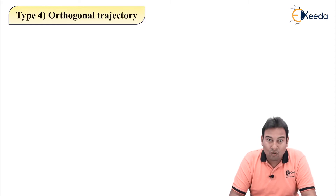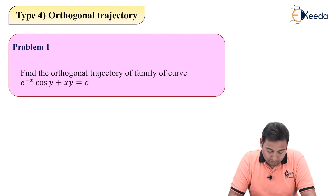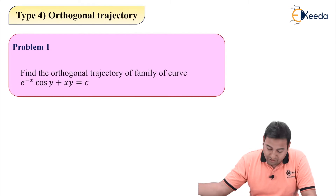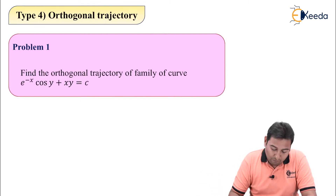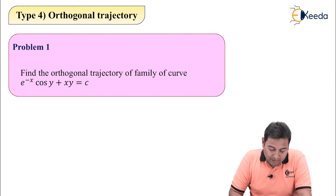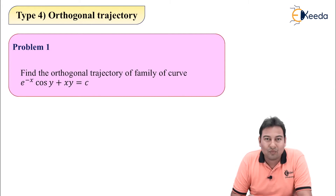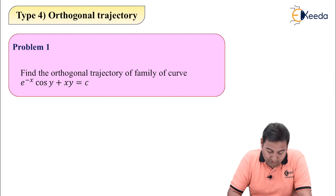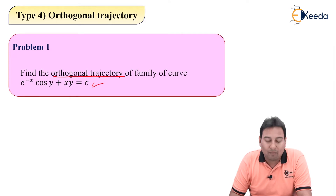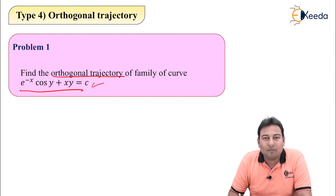Let's look at the problem: Find the orthogonal trajectory of the family of curves e^(−x) cos y + xy = c. This is the given problem. My aim is to find the orthogonal trajectory of this family of curves, so I am going to assume it as u.